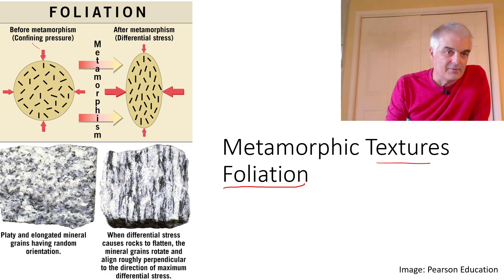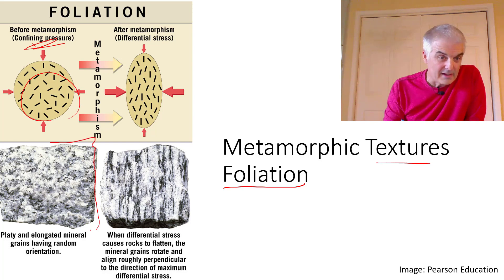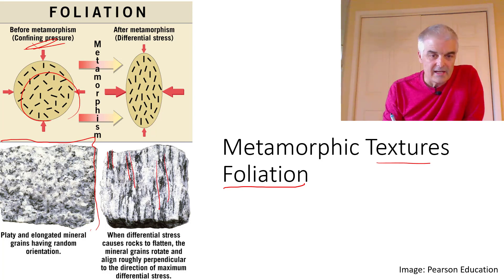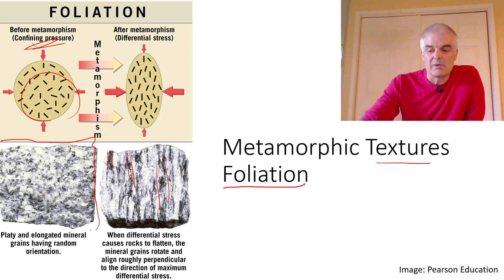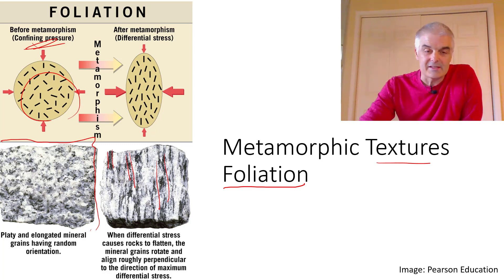So before metamorphism, the minerals are just all kind of random. But as you put pressure on them, it puts them into lines. Here is granite — we've seen granite before, you probably have granite countertops at your house. But if you put it under metamorphism, it's the same exact chemicals, but now they're in bands. The high pressure and some hot temperature make straight lines, so it's not a random pattern anymore. This is the stress caused by mountain building, and eventually those rocks make their way to the surface and we get to see them, or maybe we dig a mine and see them down there.